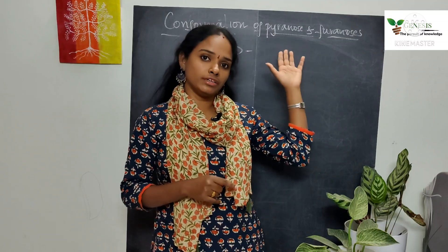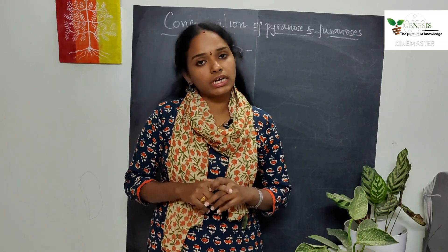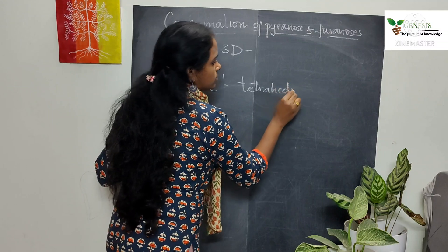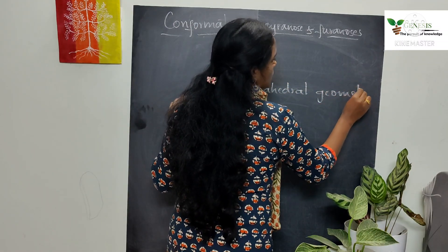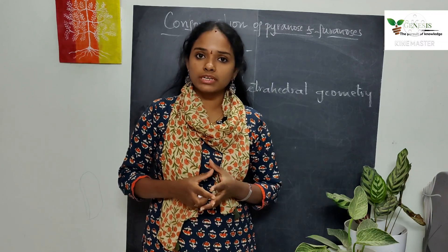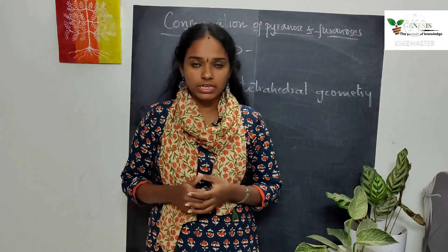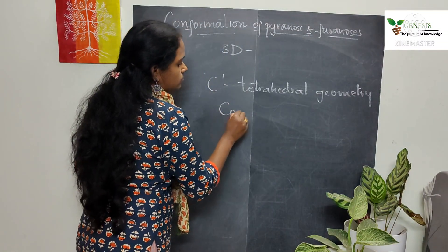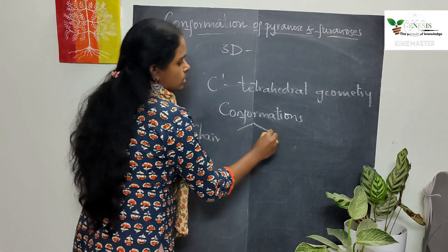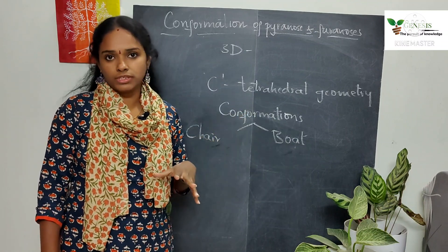The six-membered ring structures, the pyranoses, generally do not exist in a planar structure because of the tetrahedral geometry of the carbon atom. Because of the tetrahedral geometry of saturated carbon atoms in monosaccharide units, we cannot expect the conformation to be planar. For this reason, pyranoses adopt two conformations: the chair conformation and the boat conformation.